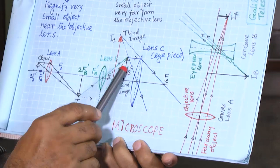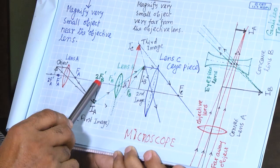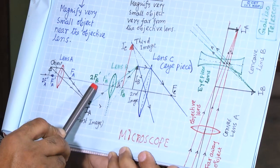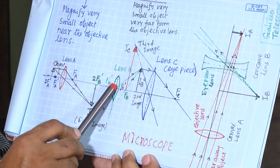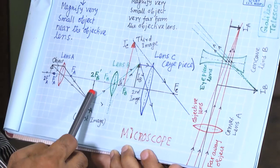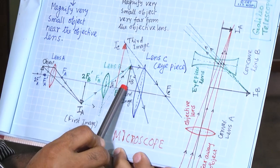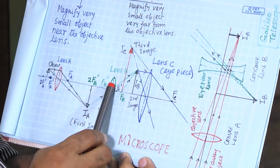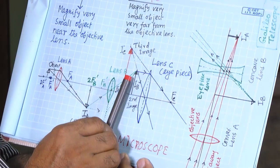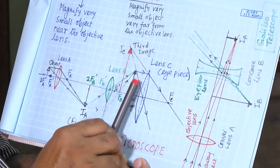This second lens is basically used just to invert the image so that the final image is in the same direction as the original object. This happens when the object is placed at 2F of lens B — the magnification is 1 (V/U = 1), so the image size is the same as the input to lens B, but the orientation is corrected.